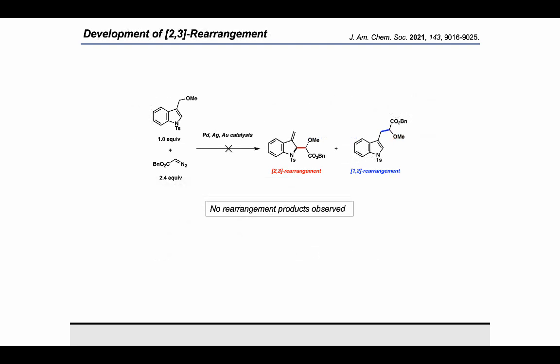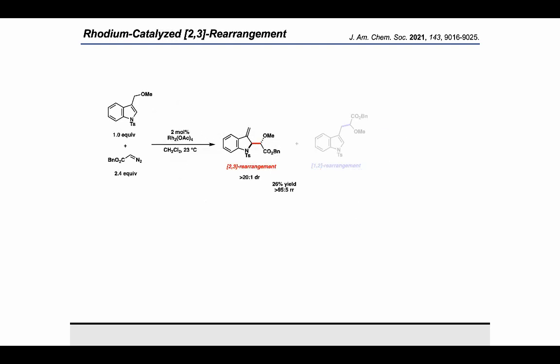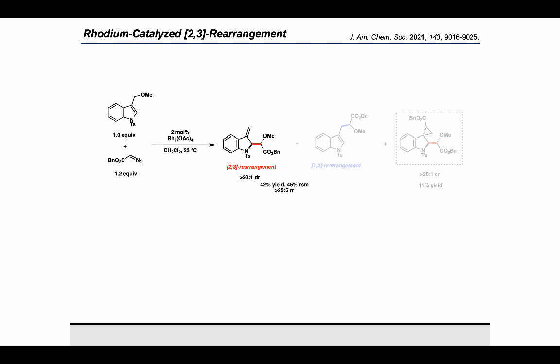Then we focused our attention on whether we could switch the selectivity to favor the 2,3 rearrangement product. Unfortunately, screening various other catalysts used in carbene chemistry, such as palladium, silver, or gold catalysts, failed to give us any rearrangement products at all. Luckily, when we used rhodium acetate as the catalyst, we saw a complete switch in regioselectivity to give the 2,3 rearrangement product. But the yield was really low, and we figured out that the product reacts further with the diazo ester to give a cyclopropanated spirocyclic side product. To suppress this side reaction, we had to lower the equivalents of the diazo ester, which increased the yield to 42%, and we were able to recover the unreacted starting material back.